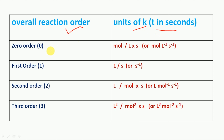First, zero order reaction — the unit is mole per liter per second, or mole liter inverse second inverse. Second, first order reaction — the unit is one per second, or second inverse.